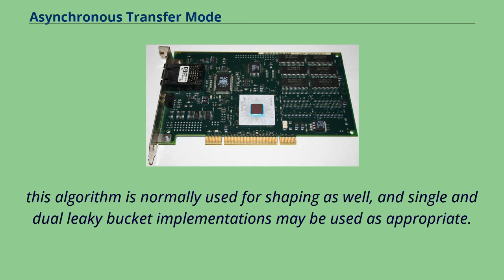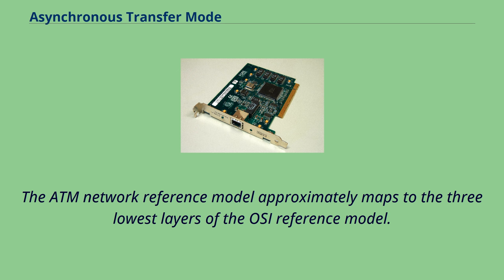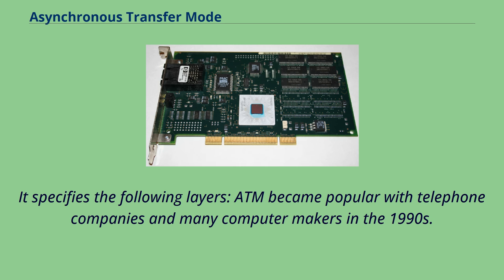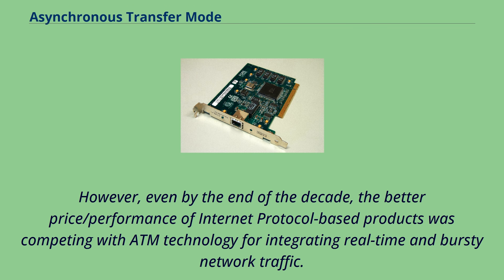The ATM network reference model approximately maps to the three lowest layers of the OSI reference model. ATM became popular with telephone companies and many computer makers in the 1990s. However, even by the end of the decade, the better price/performance of internet protocol-based products was competing with ATM technology for integrating real-time and bursty network traffic. Companies such as 4Systems focused on ATM products, while other large vendors such as Cisco Systems provided ATM as an option.